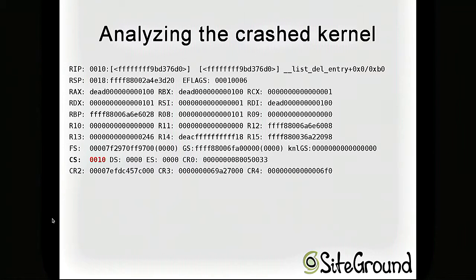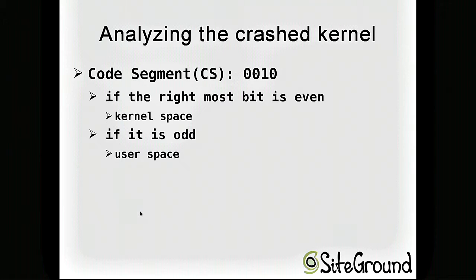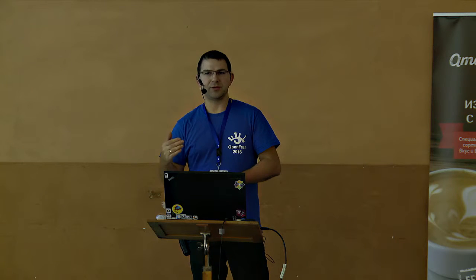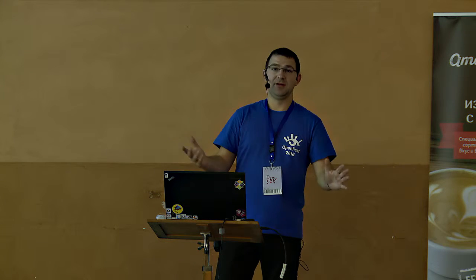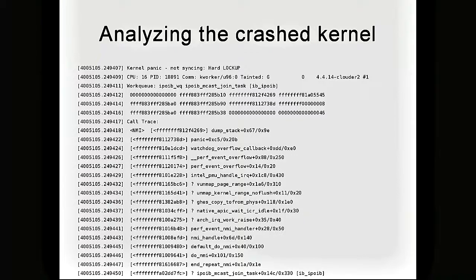Let's return to the code segment part. Code segments are important — specifically the last digit. If it is even, the process that crashed was in kernel space; if it is odd, it was in userspace. This matters because if a function normally executing in kernel space runs in userspace, or vice versa, this directly tells you that your memory is probably corrupted or your CPU is corrupted. We've replaced a lot of RAM and mainboards based solely on this indicator.